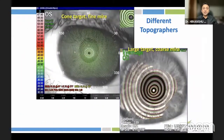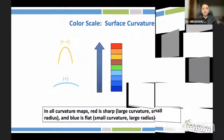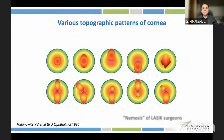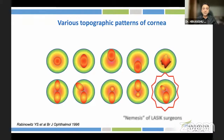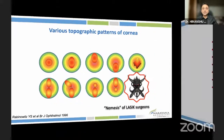When we talk about topographers, we refer to the Placido-based topographer, which comes in different sizes and ring sizes, but all of them speak one language: the steeper the cornea, the warmer the color. Rabinovich and colleagues described 10 common topographic patterns, one of which — the asymmetric bow-tie pattern with radial skewing and inferior steepening — is the typical pattern of keratoconus, which every LASIK surgeon hates to see.